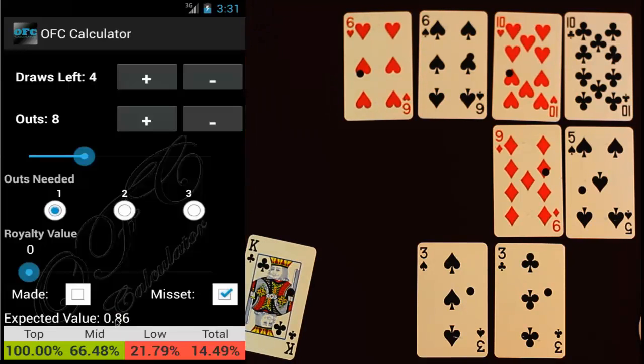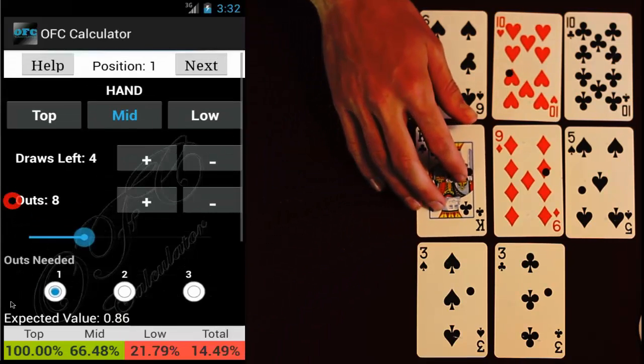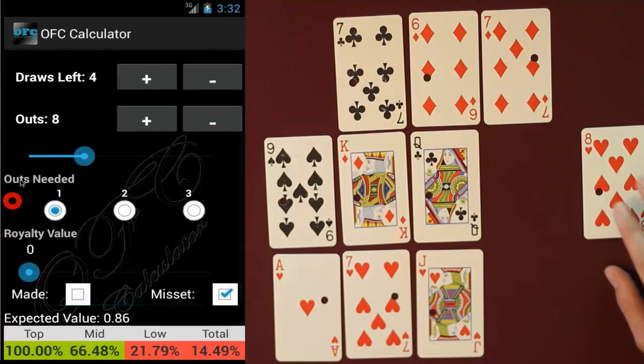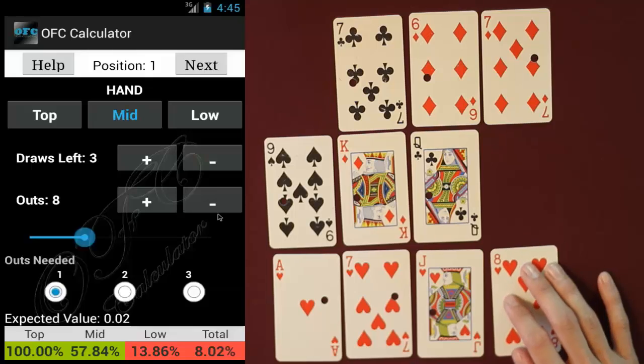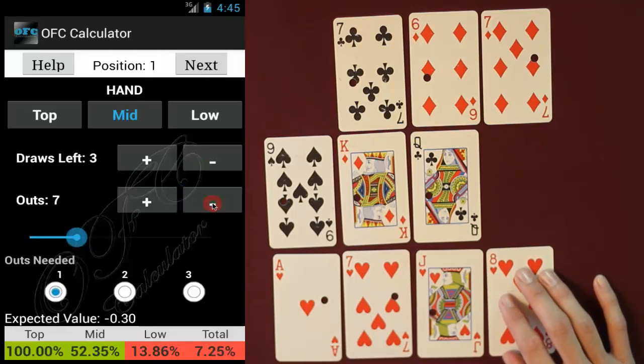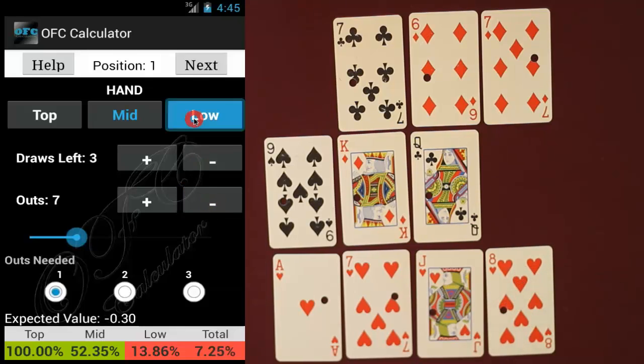Our opponent draws the king of clubs and we then draw the eight of hearts. So first let's decrease our draws by one, decrease our outs in the middle hand by one because they drew one of the kings. Then switch to our low tab and we're going to change the number of outs needed to one because now we only need one out and we're also going to decrease the number of outs because we just hit one of our outs.